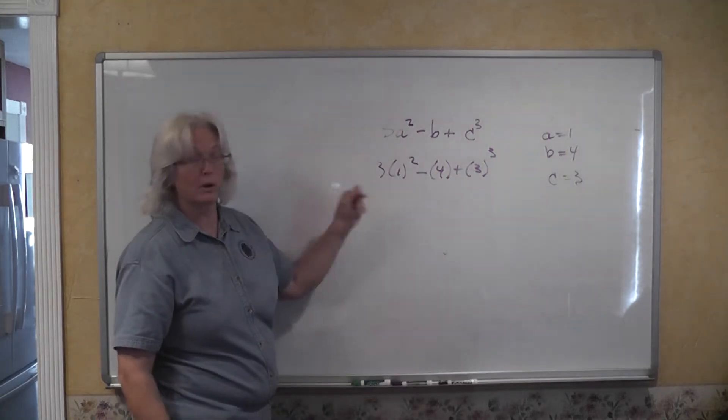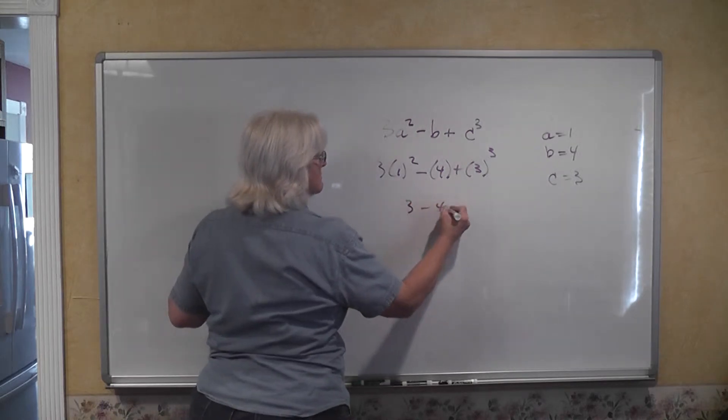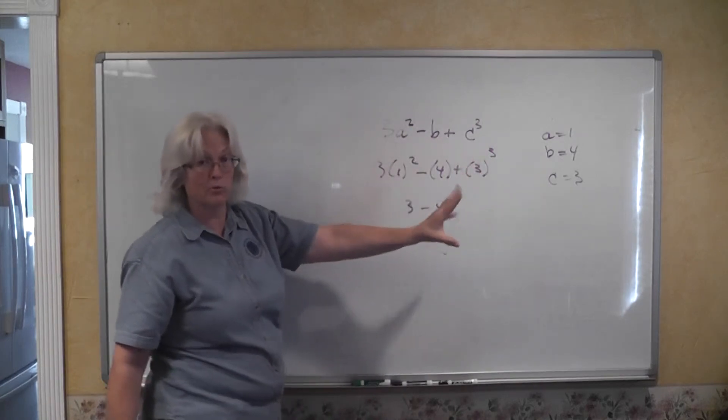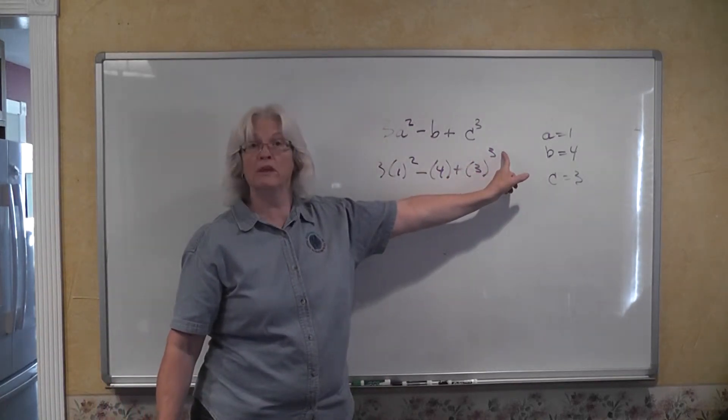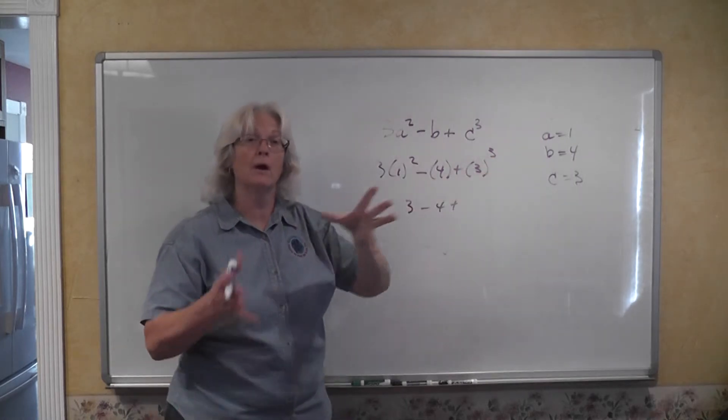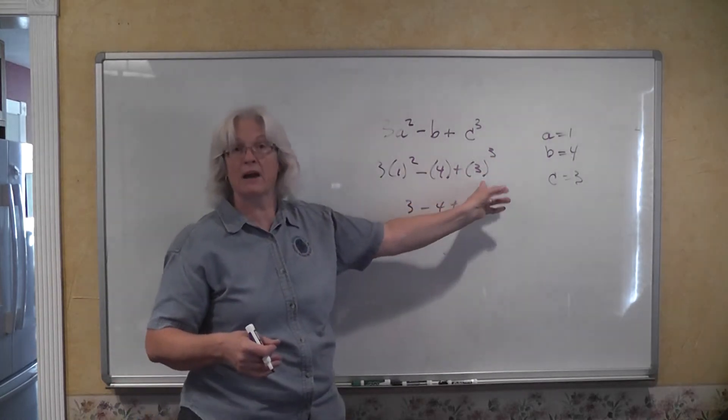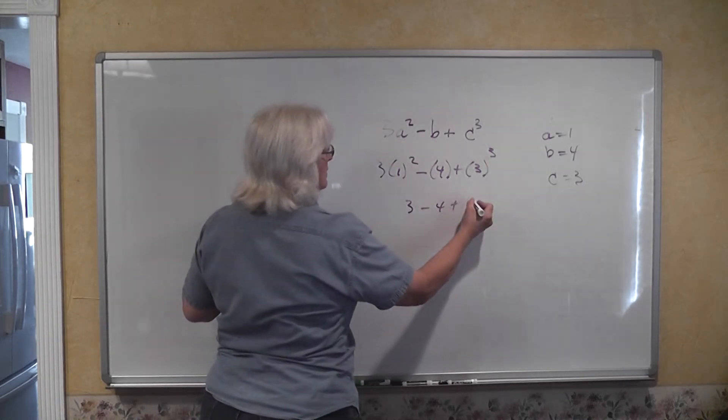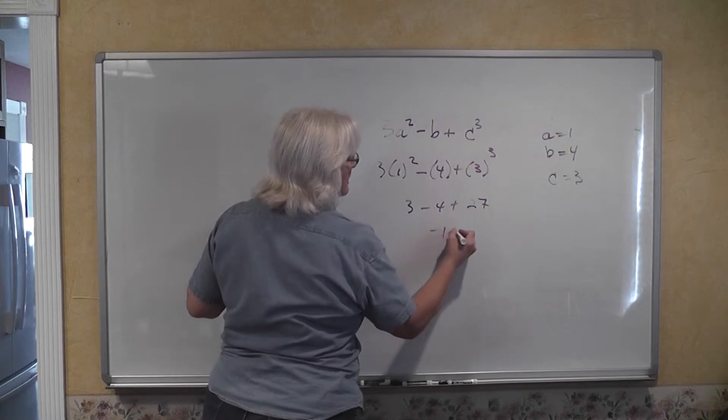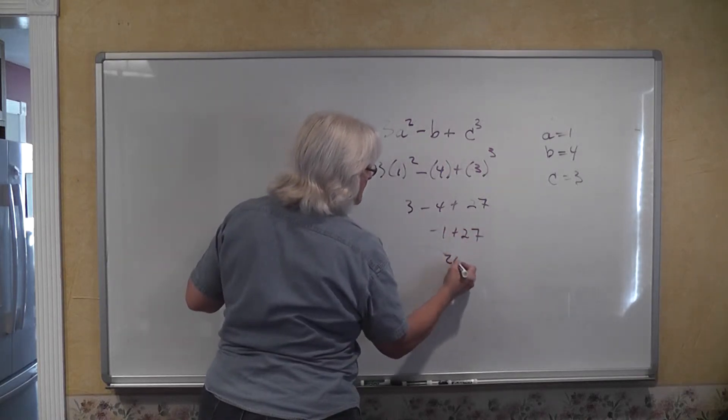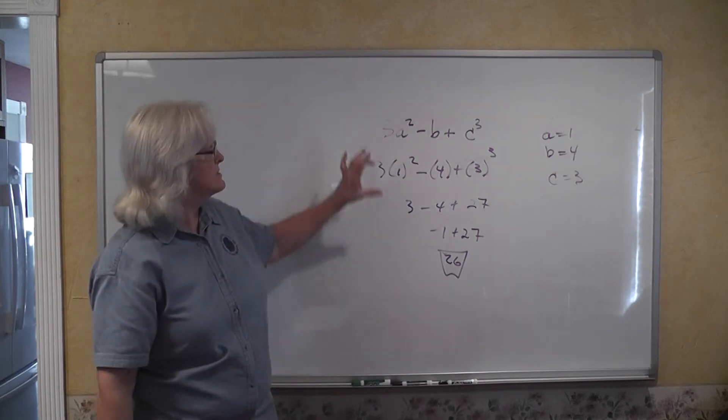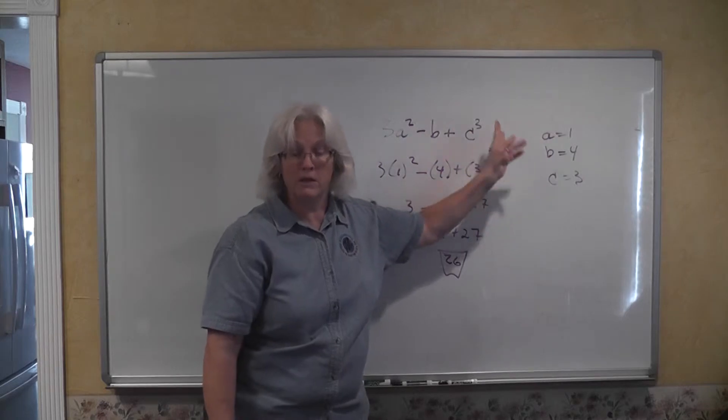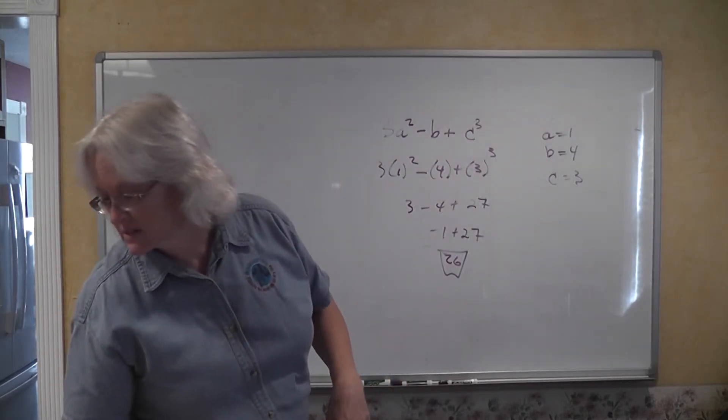So we're going to have 3 times 1 squared minus 4 plus 3 used as a factor 3 times. This cube, this exponent of 3, is telling you to use 3 as a factor 3 times. 3 times 3 is 9 times 3 is 27. Negative 1 plus 27 gives us a value of 26 for this algebraic expression when a is equal to 1, b is equal to 4, and c is equal to 3.